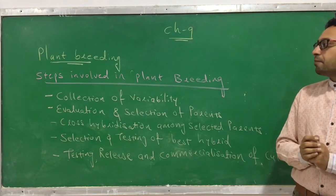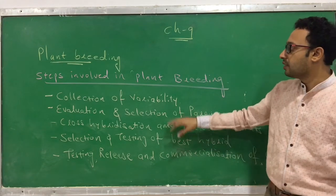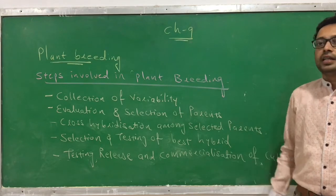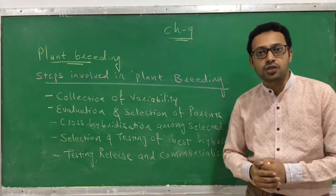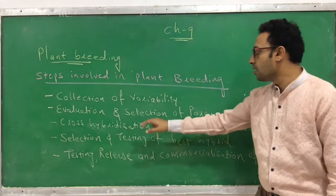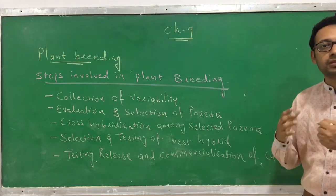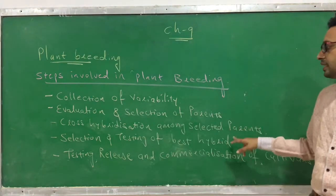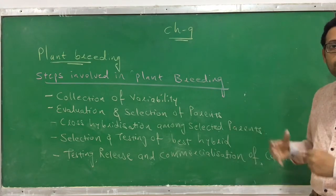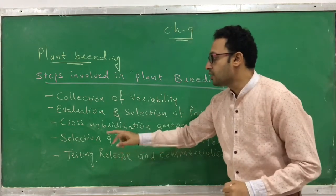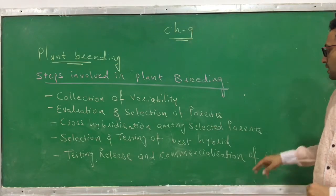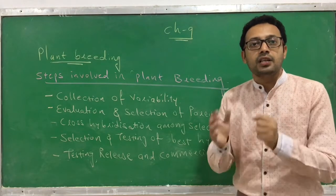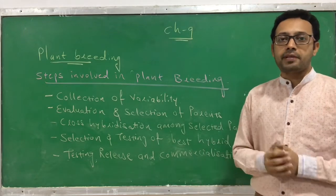To recap the five main important steps in plant breeding: first, collection of variability; second, evaluation and selection of parents; third, cross-hybridization among selected parents; fourth, selection and testing of the superior hybrid; fifth, testing, release, and commercialization of cultivars.